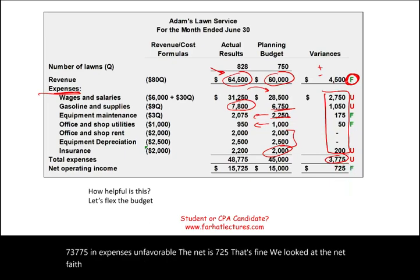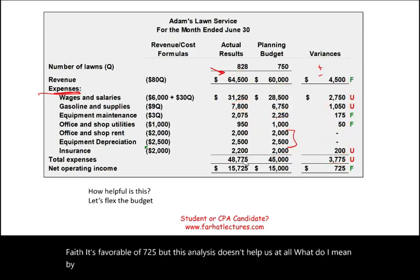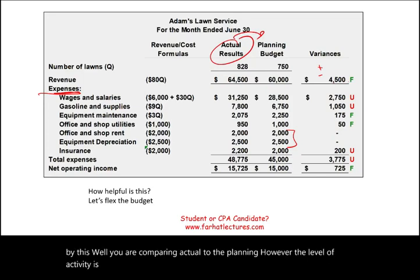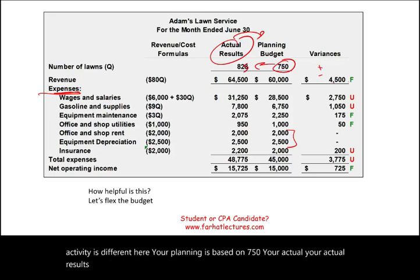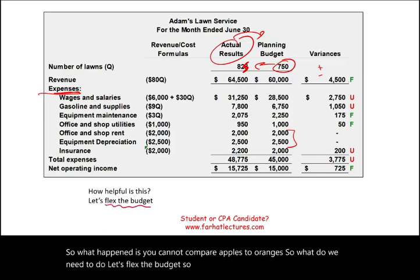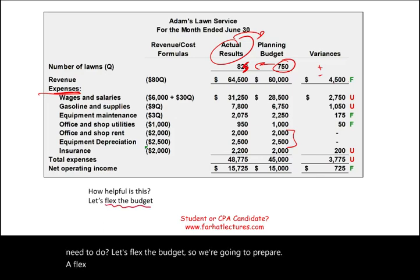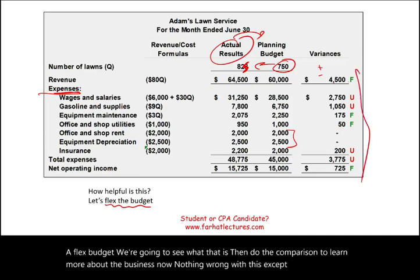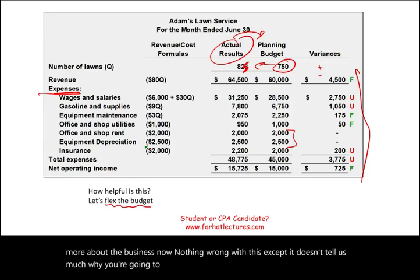This analysis doesn't really help us because we're comparing actual to planning with different levels of activity. The planning is based on 750 units while actual results are based on 825 units — you cannot compare apples to oranges. So what do we need to do? Let's flex the budget. We'll prepare a flexible budget and then do a proper comparison to learn more about the business.